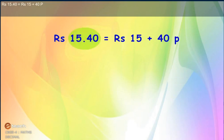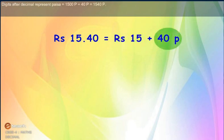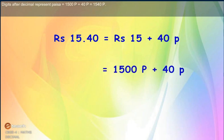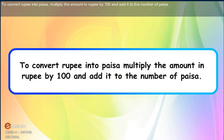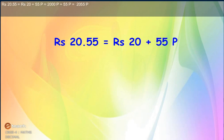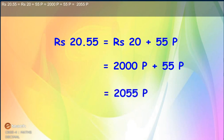Rs. 15.40 equals Rs. 15 plus 40 paise. The digits after the decimal point represent paise. To convert rupees into paise, multiply the rupees amount by 100 and add the number of paise. Rs. 20.55 equals Rs. 20 plus 55 paise, which is 2,000 paise plus 55 paise, equals 2,055 paise.